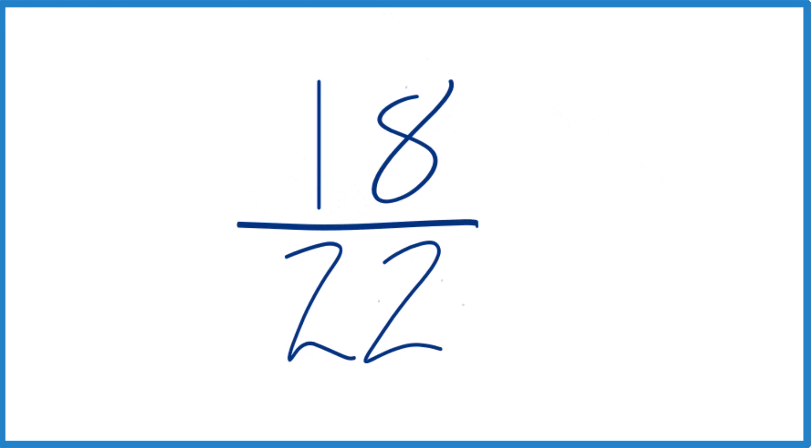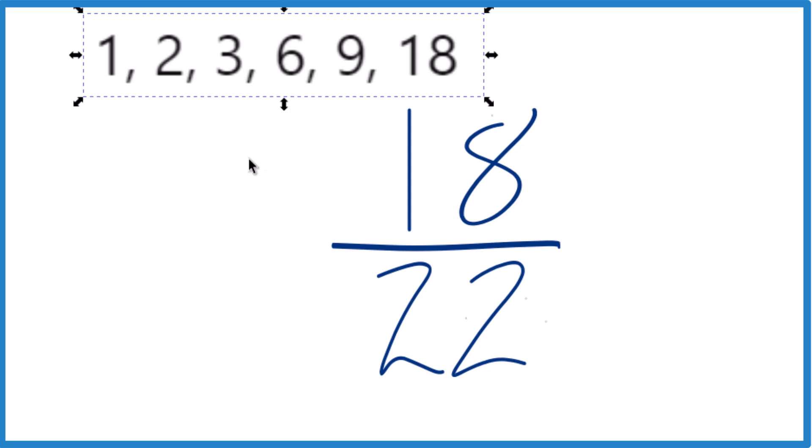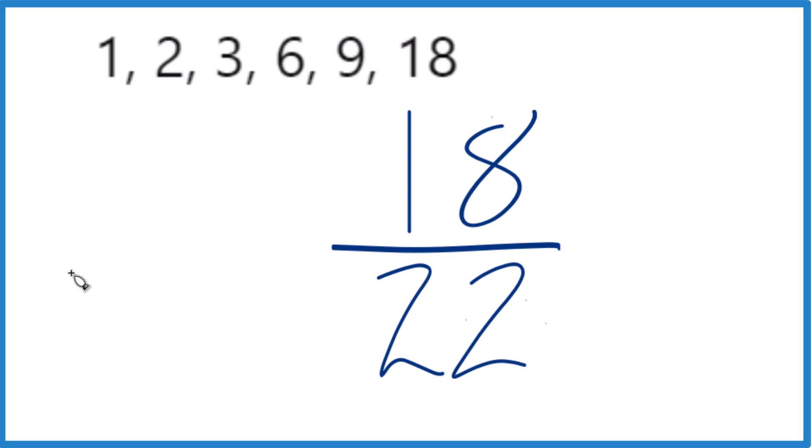Let's look at the factors of 18 here. 1 times 18, 2 times 9, and 3 times 6. For 22, 1 times 22, and 2 times 11, but that's it.